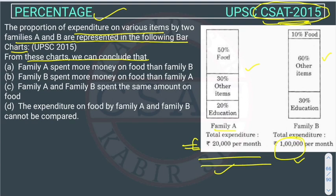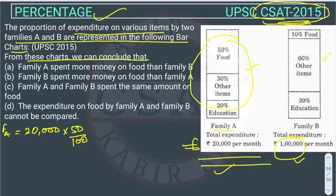Family A is spending 50% on food. So we are calculating the expenditure of family A on food — it is 50% of the total expenditure. The total expenditure percentages add up to 100 (10%, 60%, 30%). So 50% of 20,000 gives us 10,000.